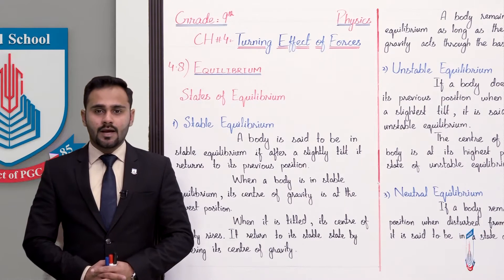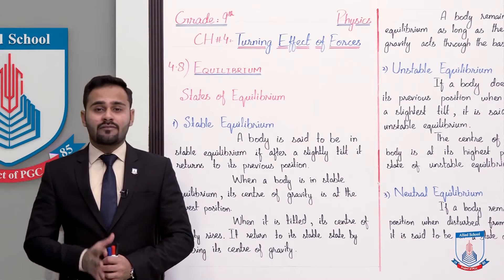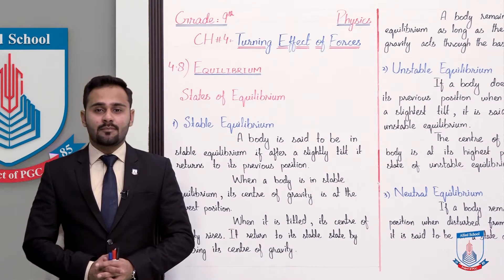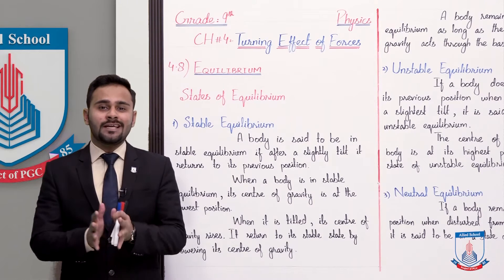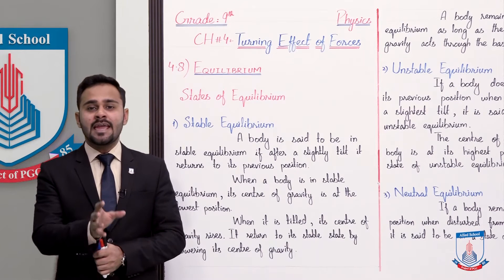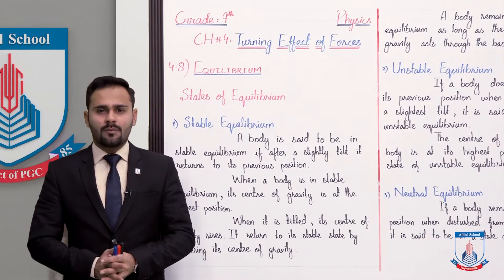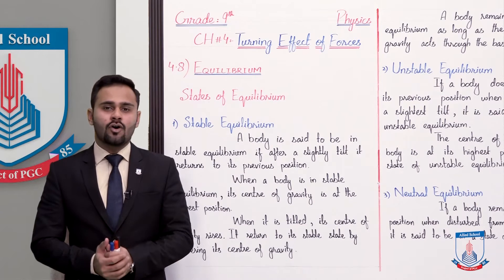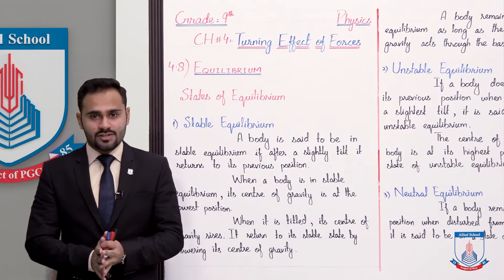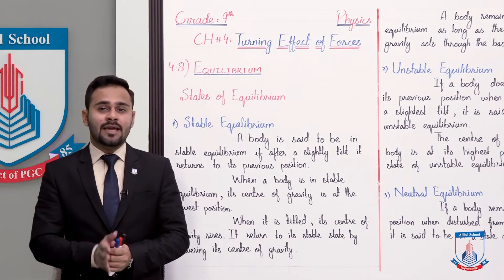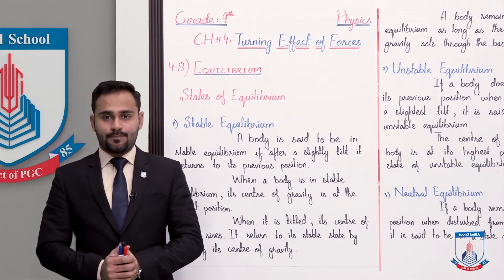There are three states of equilibrium: stable equilibrium, unstable equilibrium, and neutral equilibrium. A body is always present in one of these three states of equilibrium. Let's first discuss what these states are, with examples, so that these states become further clear.